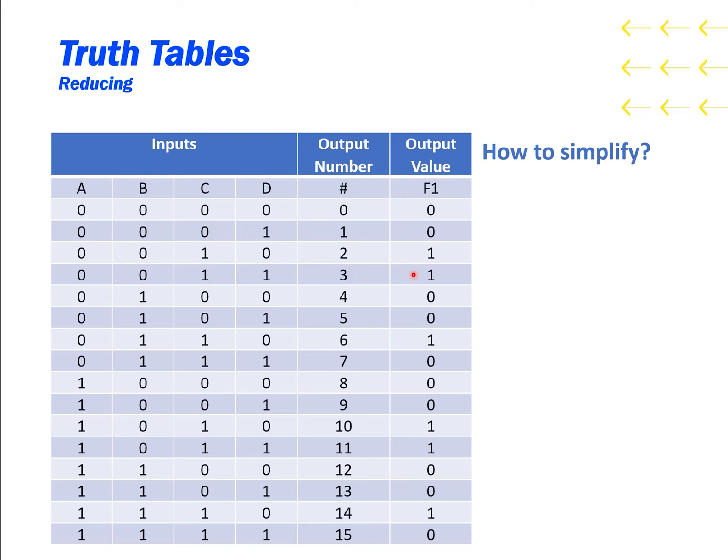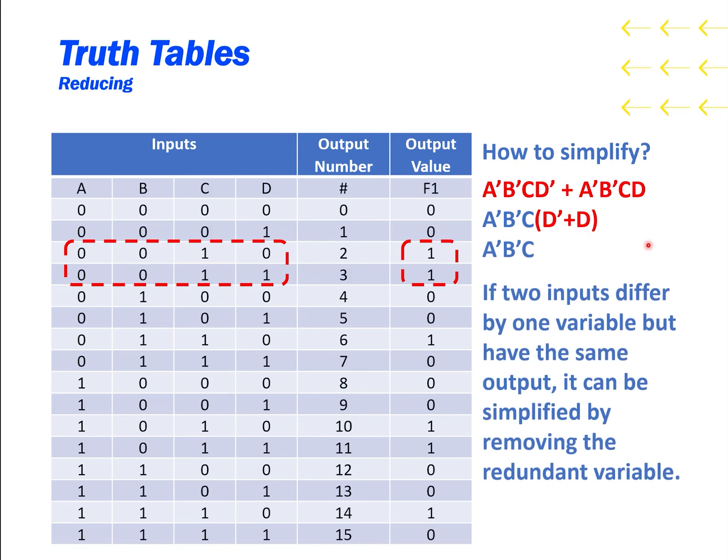How do you simplify? Notice that these two entries both output 1, but they differ only by one variable. The rest are the same. That gives us these two terms. But because they are almost the same, we can pull out the A', B', and C. And notice that D' OR D just simplifies to 1, so we can satisfy both outputs with just one term.